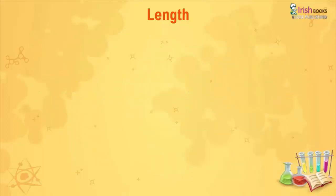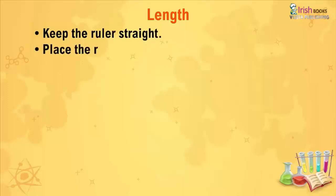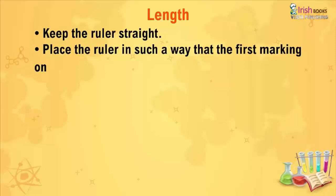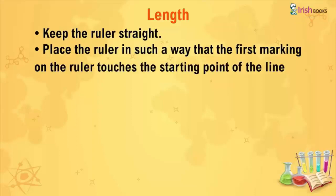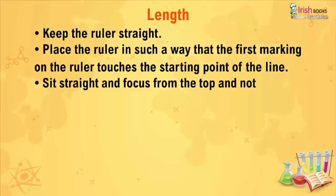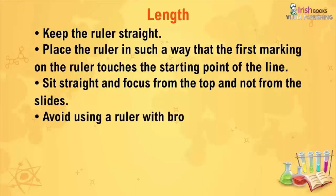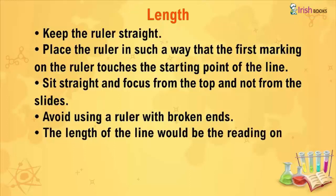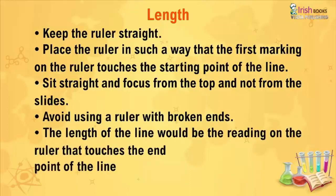Keeping the ruler straight, place the ruler in such a way that the first marking on the ruler touches the starting point of the line. Sit straight and focus from the top and not from the sides. Avoid using a ruler with broken ends. The length of the line would be the reading on the ruler that touches the end point of the line.